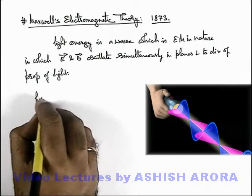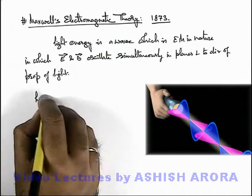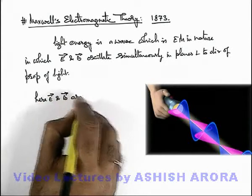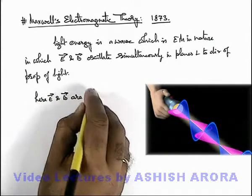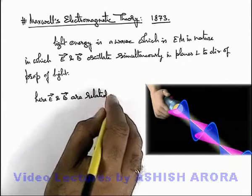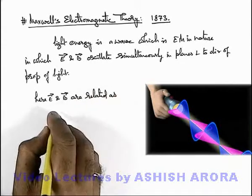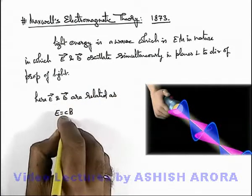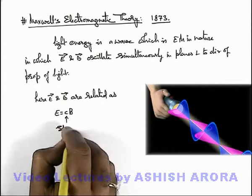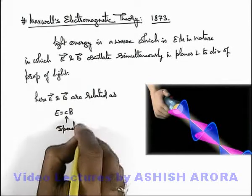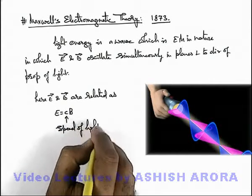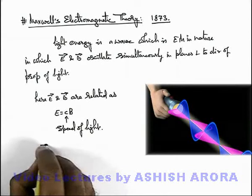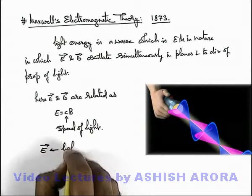Here, the E vector and B vector are related as E = cB, where c is the speed of light. In the case of light, the E vector is mainly called the light vector.